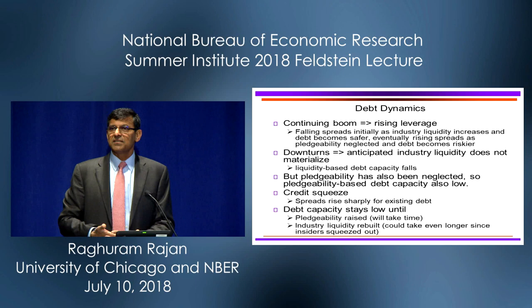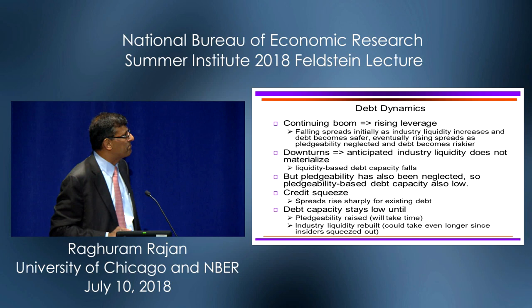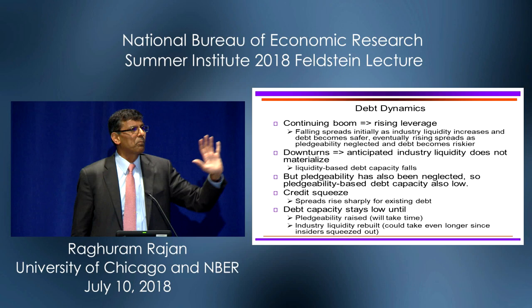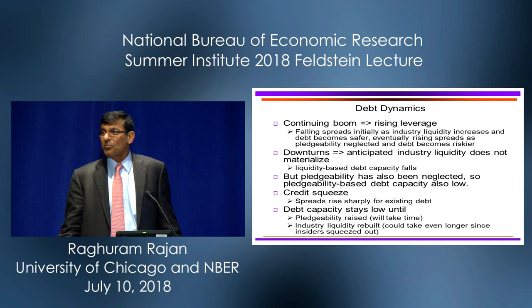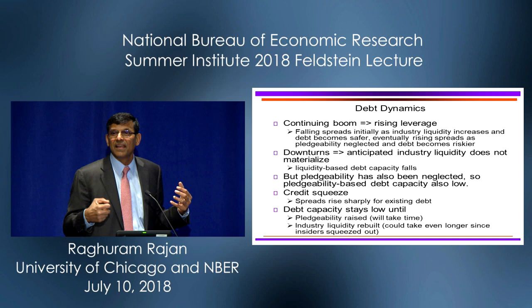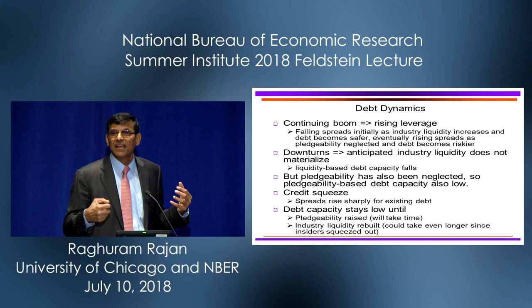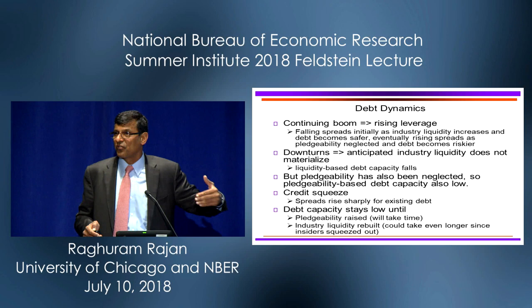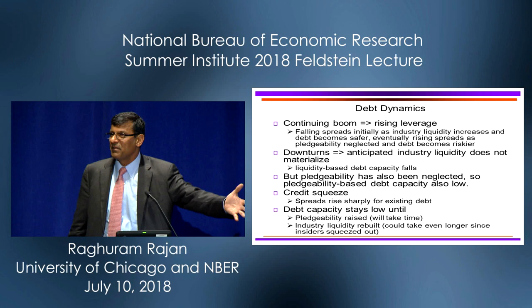What are downturns here? Downturns are when, because of tightness, the anticipated industrial liquidity doesn't materialize — that source of debt capacity doesn't materialize. But also, over this period, we've neglected maintaining corporate governance and pledgeability. So pledgeability-based debt capacity is also very low. In other words, debt capacity collapses as soon as liquidity vanishes, because we haven't maintained anything else. You have a credit squeeze, spreads rising sharply, and it takes a long while for debt capacity to be restored — either by raising pledgeability through improvements in corporate governance, finding good forensic accountants, which takes time, or if industry liquidity is rebuilt, which also could take a long time.